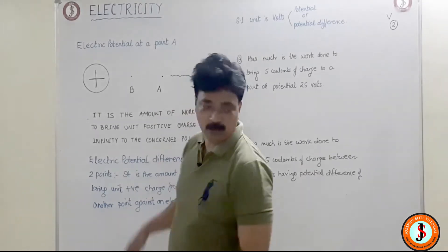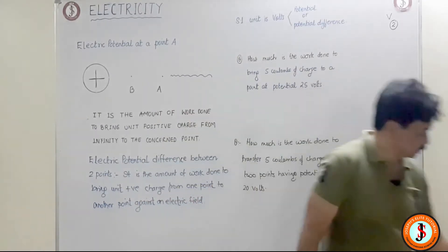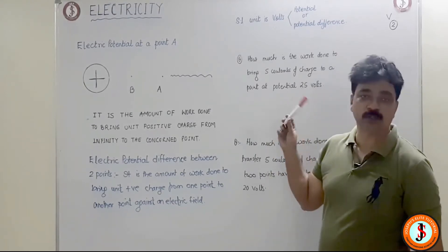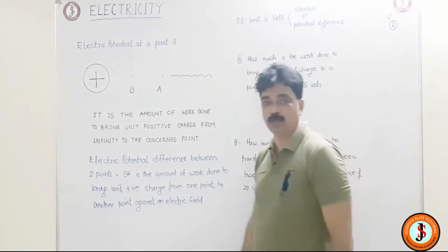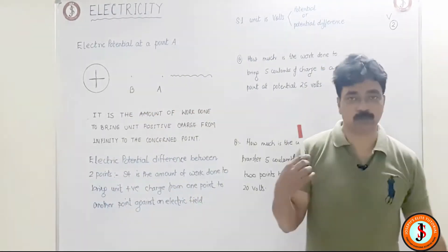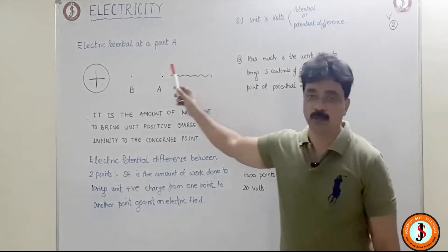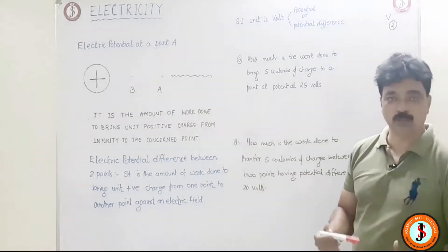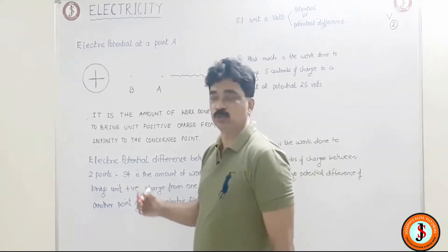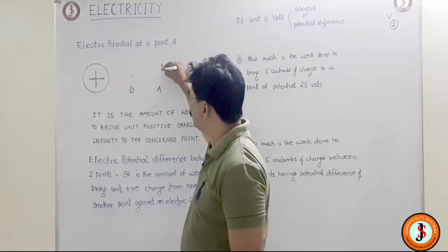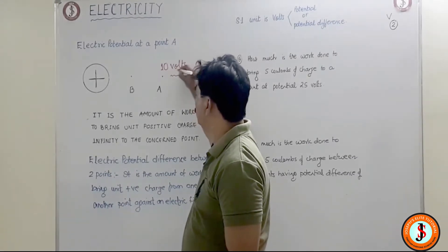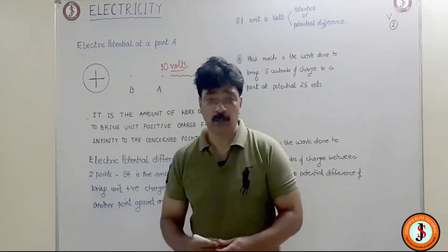I take another object — say for example I bring this, it has got a unit positive charge, one Coulomb of charge. Now when I am bringing it towards the point, I have to do work. To bring one Coulomb of charge — say for example I did 10 joules of work — then the potential at this point will be said to be 10 volts.